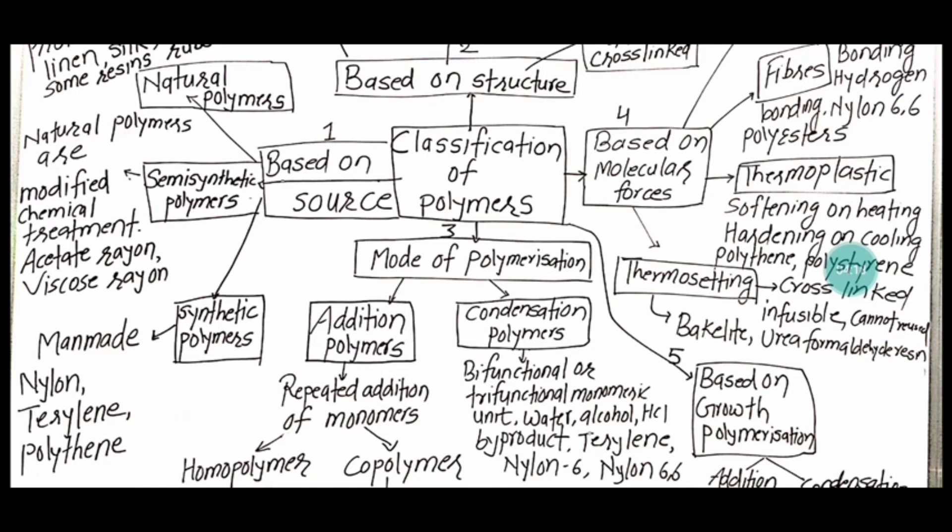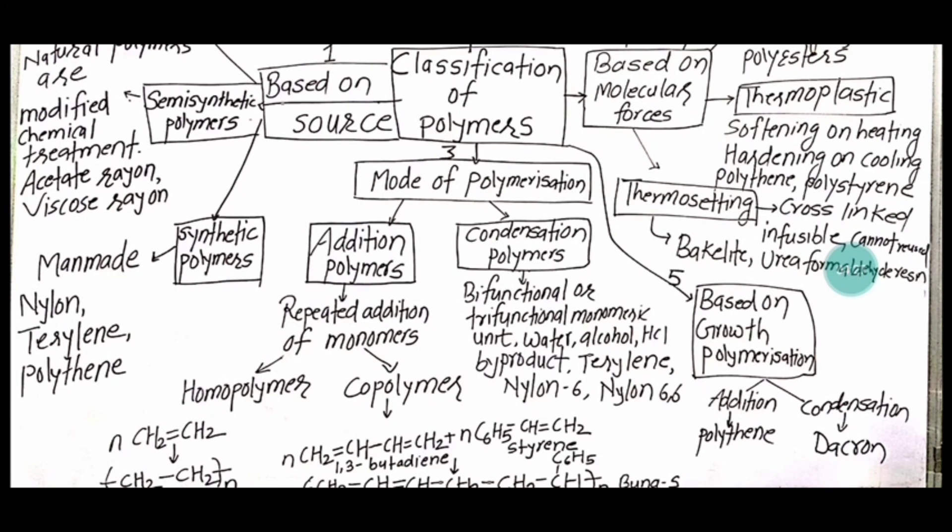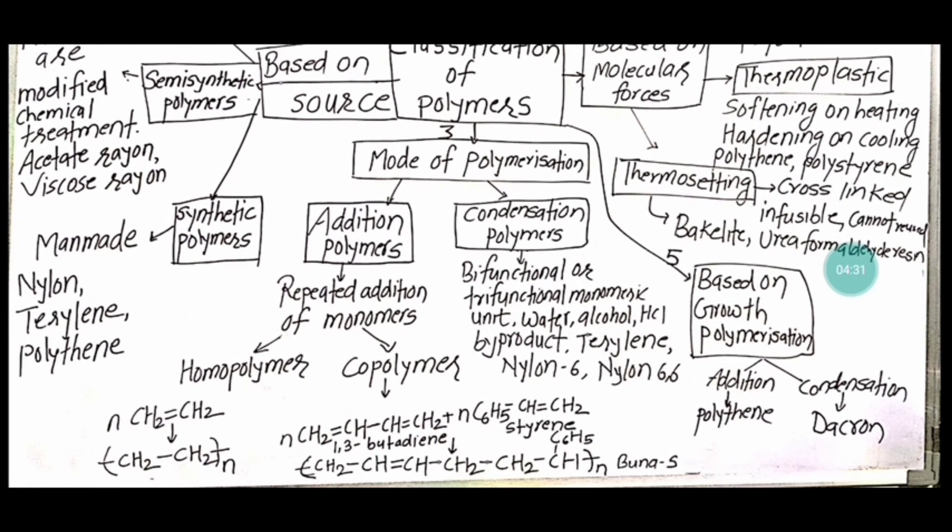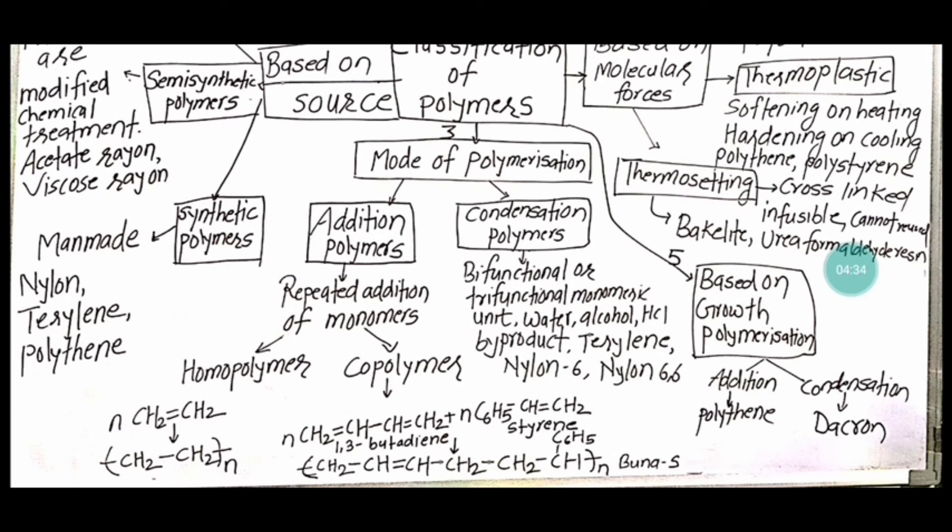It is infusible, you cannot reuse it. For example, bakelite and urea formaldehyde resins. The fifth one we have is based on growth polymerization. Basically addition and condensation polymers come under this category because of the active units they have and we can form a long chain. It forms from addition.